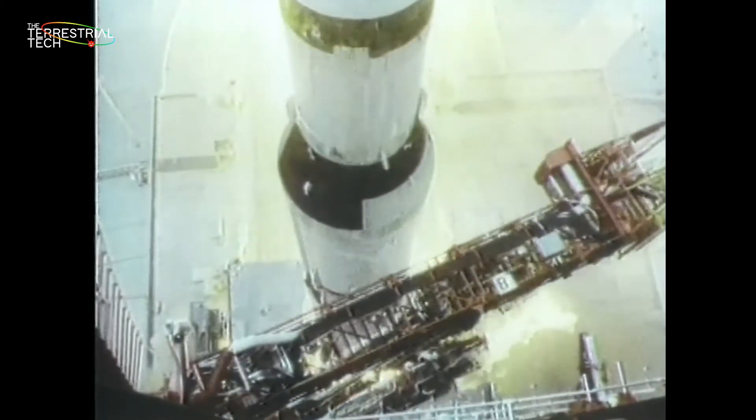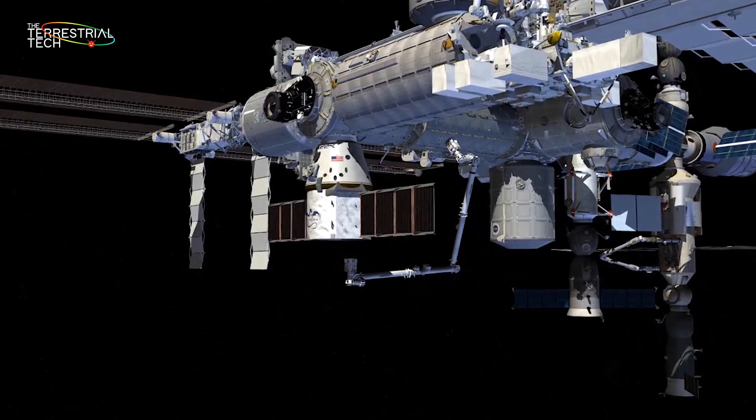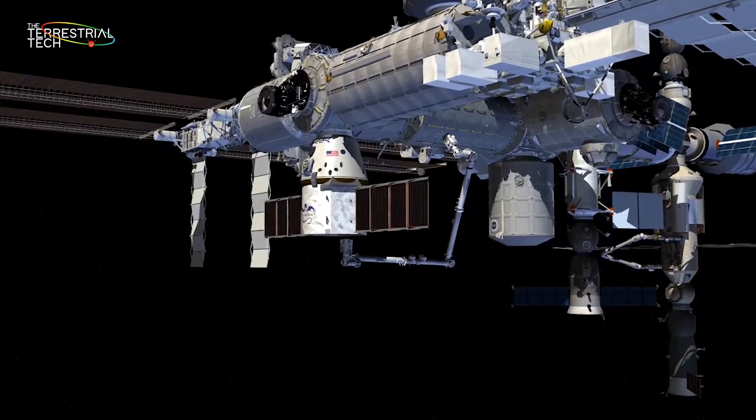However, the two later changed their aims, where the United States landed people on the moon and designed the space shuttle. The Soviet Union launched the first space station Salyut 1 in 1971.